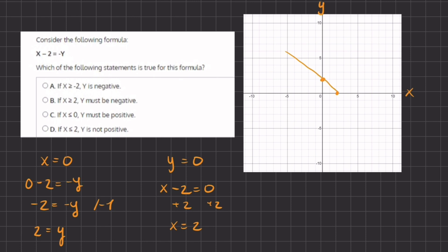So now that we have these two points, let's plot them and this is our linear function. Now let's read our options. If x is greater than or equal to negative 2, then y is negative. So let's go to x is negative 2 right over here.